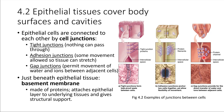Just beneath epithelial tissue, we have what's called a basement membrane. It's made of proteins secreted by the epithelial cells and also by the cells just beneath, which is usually connective tissue. The basement membrane helps to hold the epithelial tissue in place, anchoring it to whatever substrate is right beneath it, giving structural support so that the epithelial tissue stays put right where it's supposed to be.